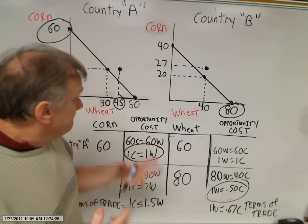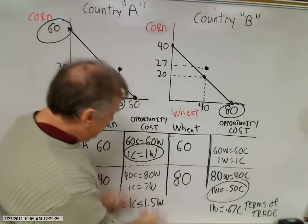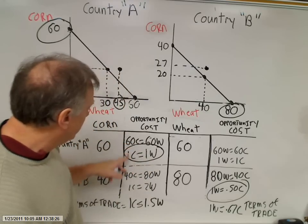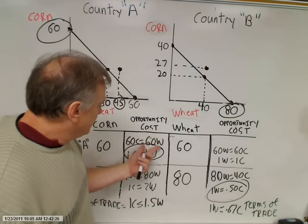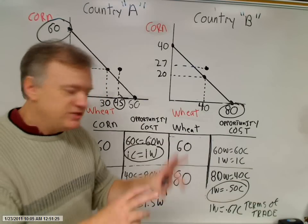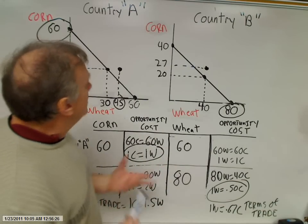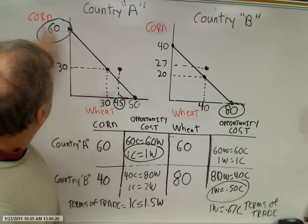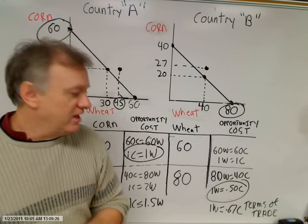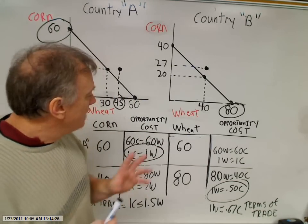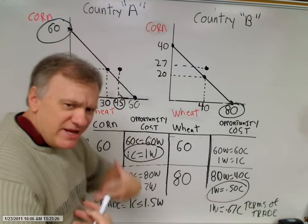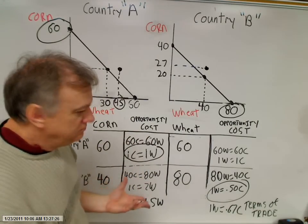That's it. The only caveat is that if the terms of trade fall outside the parameters of the opportunity costs — for example, if one corn purchased only half a wheat, or one corn for three wheat — then one or both countries would end up worse off, consuming inside their production possibilities frontier. It only works to their mutual benefit if the terms of trade fall between the two opportunity costs. If you set up this graphic organizer, you can answer most questions on the test. Thank you very much.